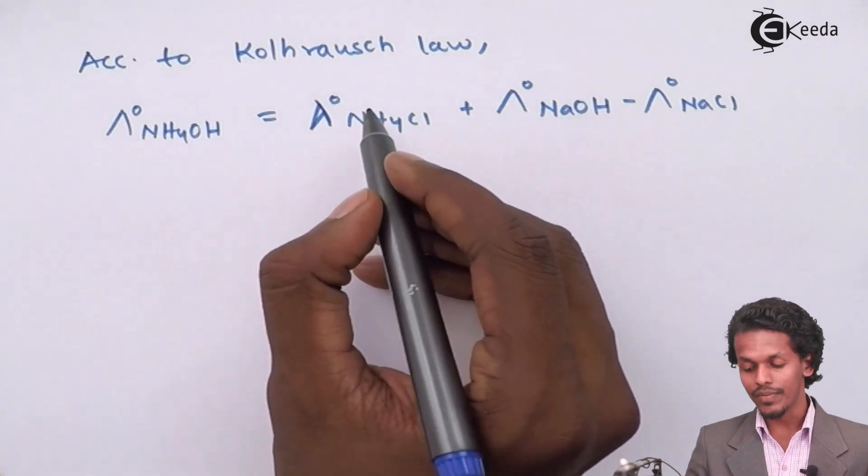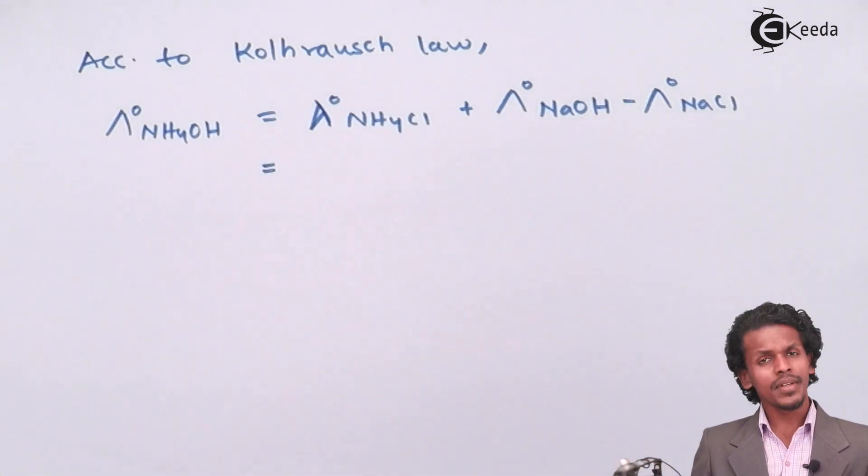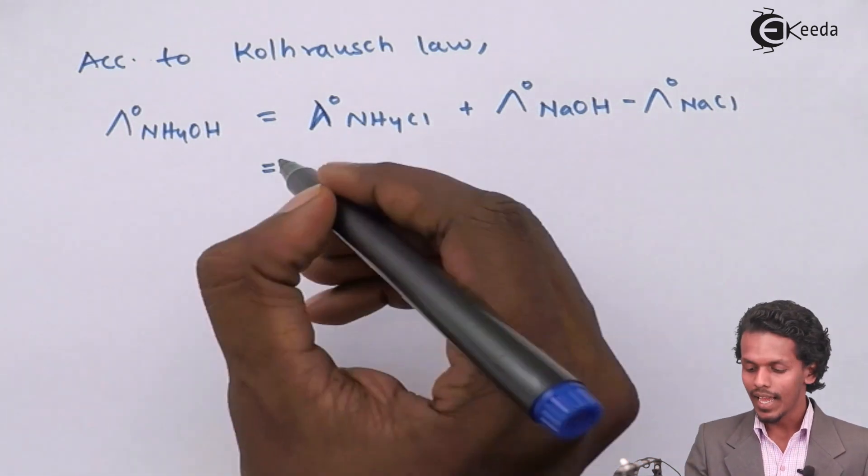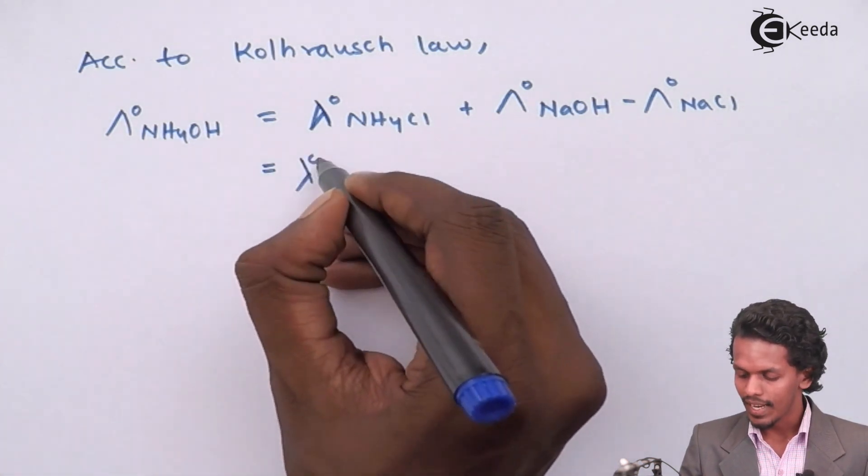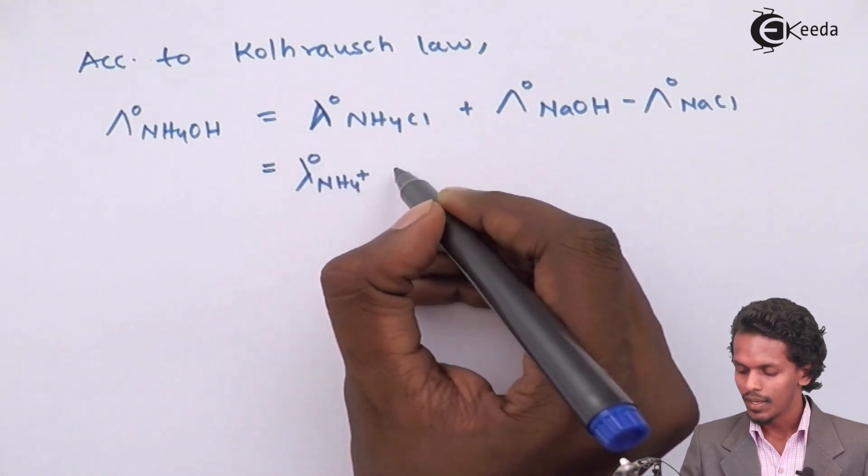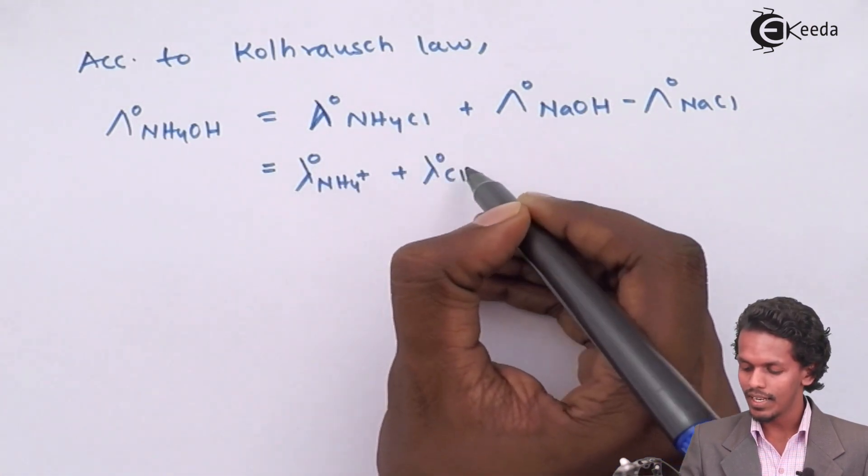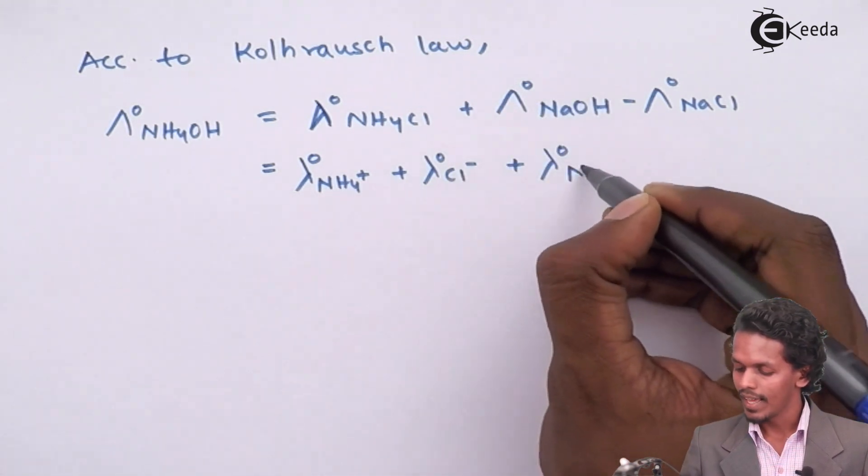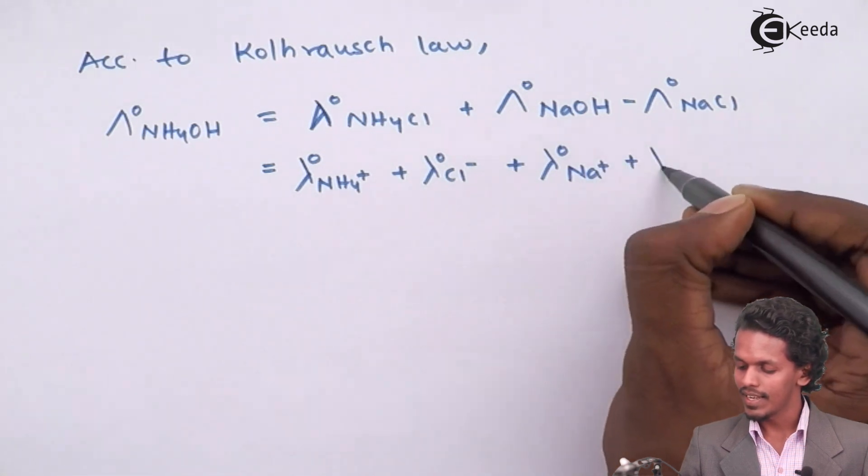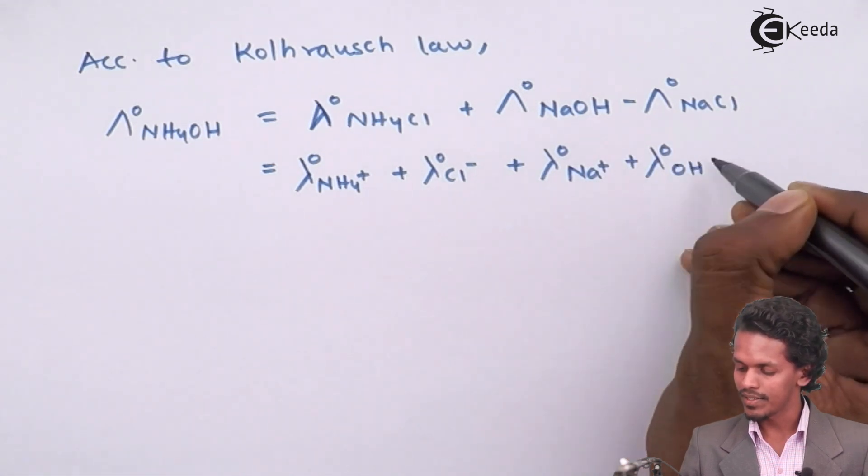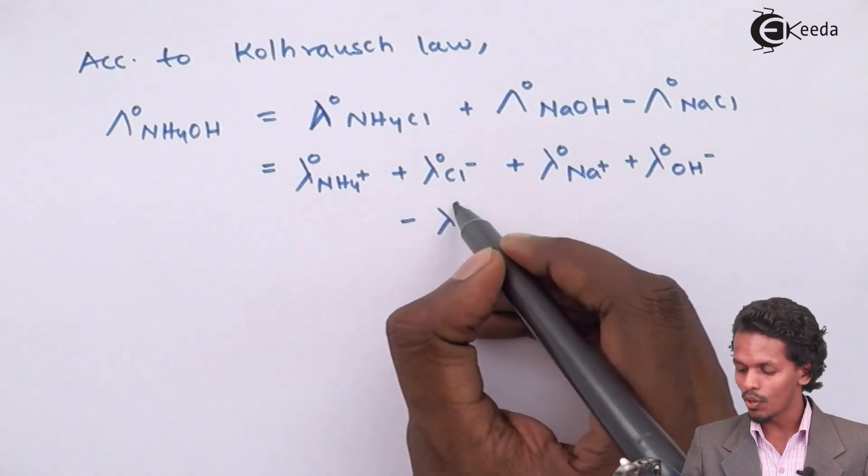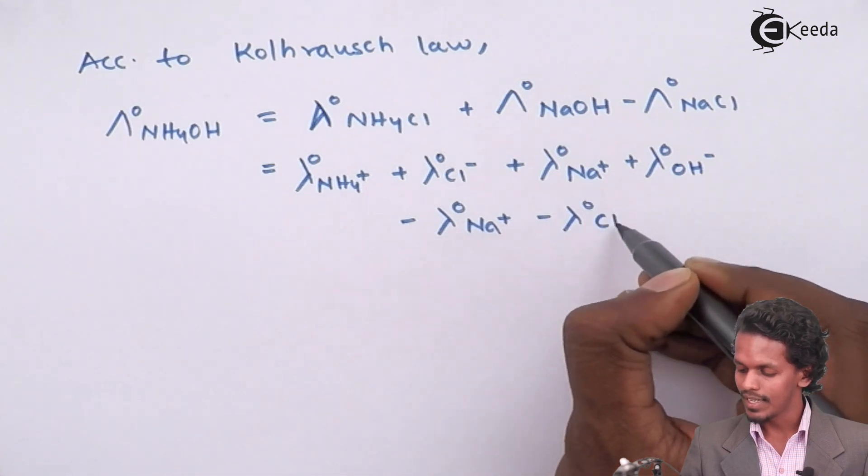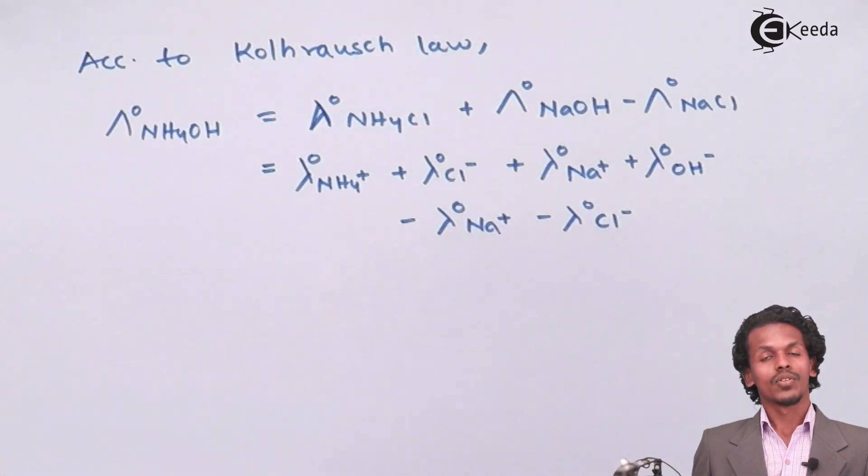If I separate it in anionic form and cationic form of molar conductivity, I could get lambda naught of NH4+ plus lambda naught of Cl-. For NaOH, lambda naught of Na+ plus lambda naught of OH-. And for NaCl, I subtract lambda naught of Na+ and lambda naught of Cl-.